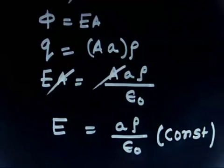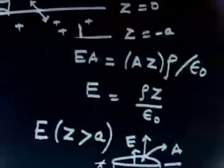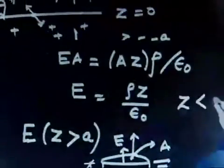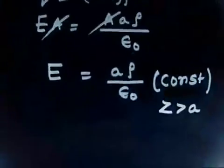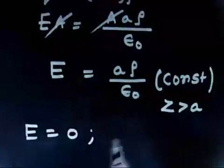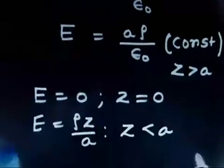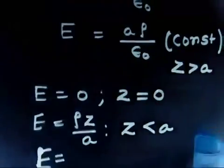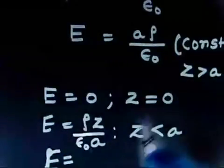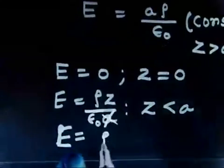So to summarize: for z less than A, the electric field is rho z divided by epsilon-naught — linearly varying. For z greater than A, the electric field is rho A divided by epsilon-naught — a constant. The first expression is a function of z; the second is constant since rho, A, and epsilon-naught are all constants.